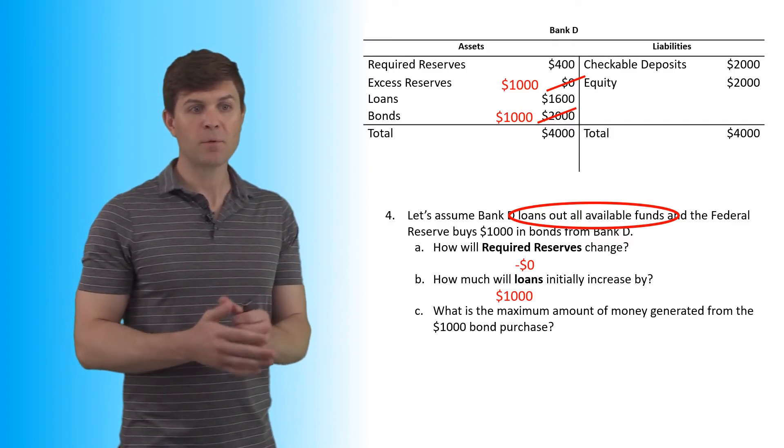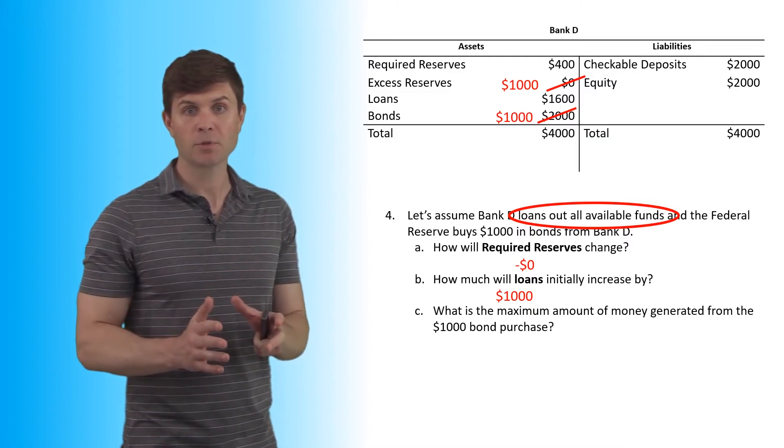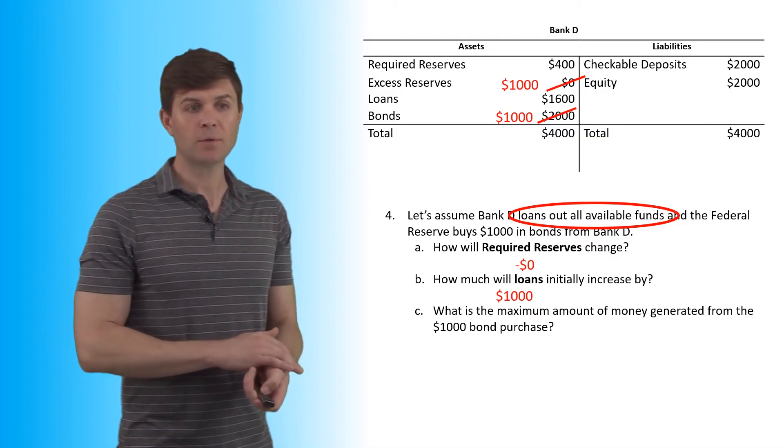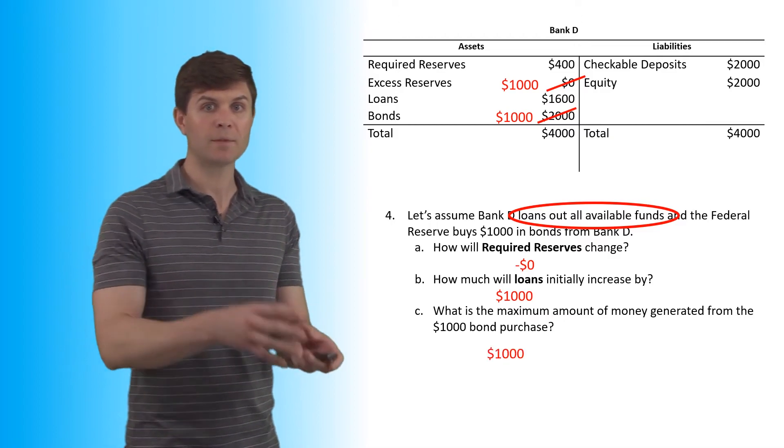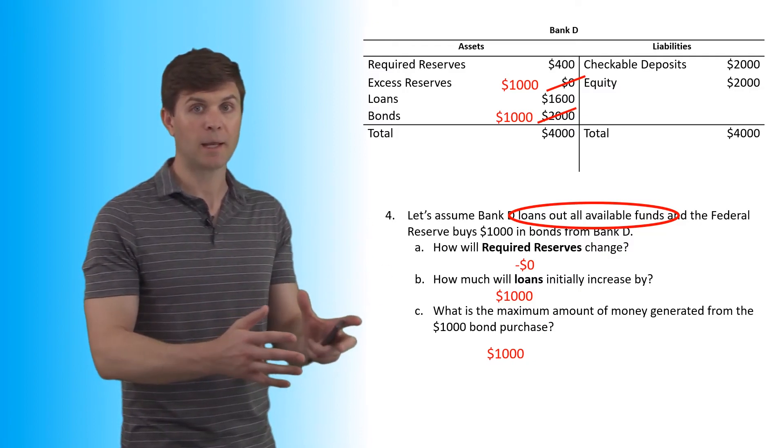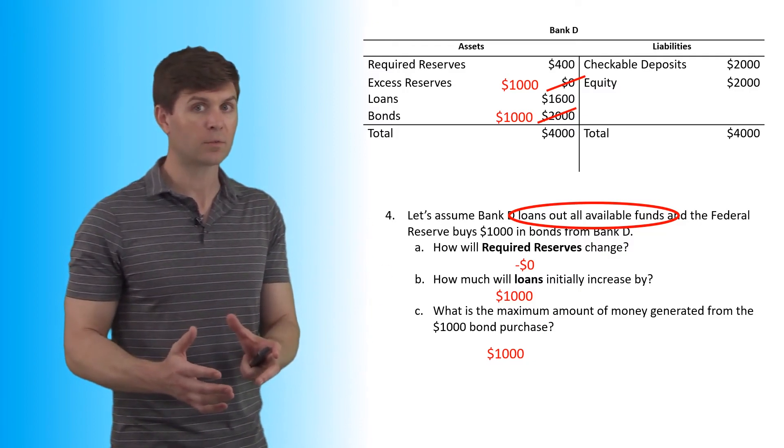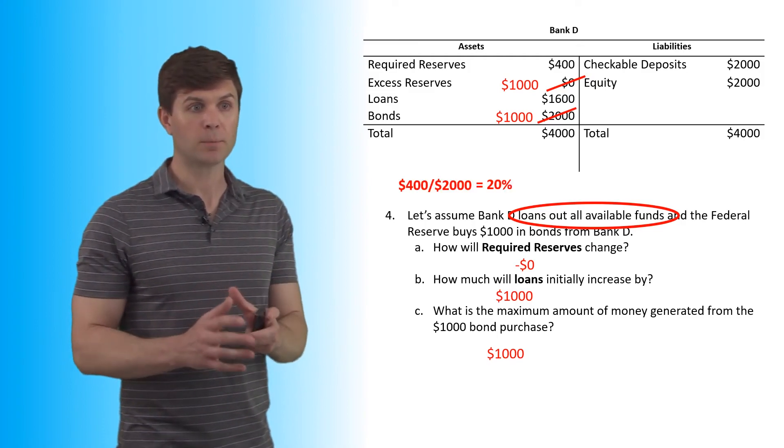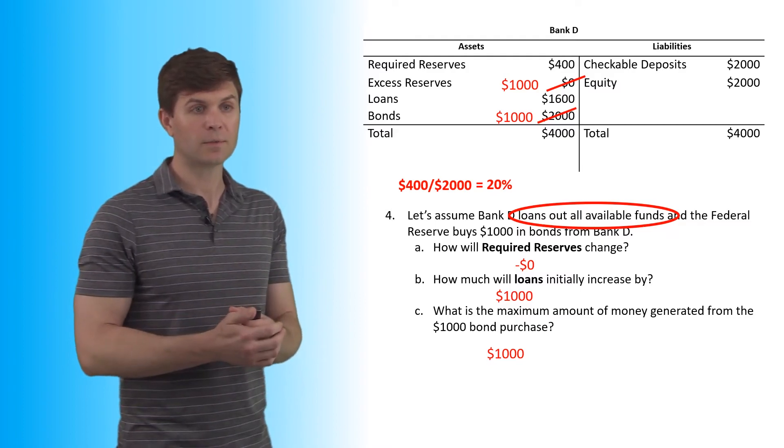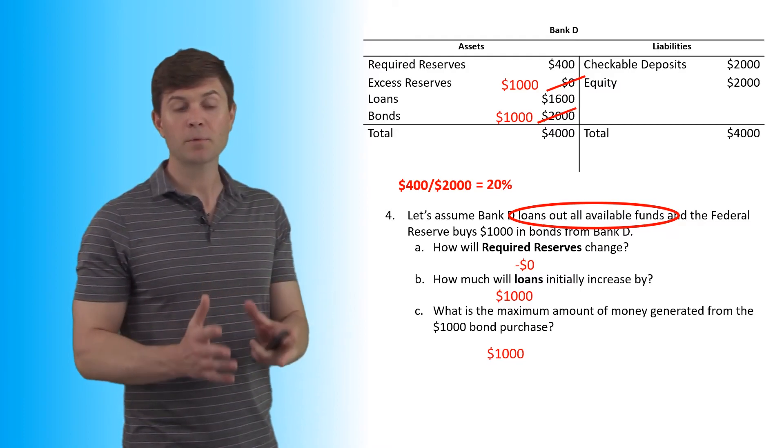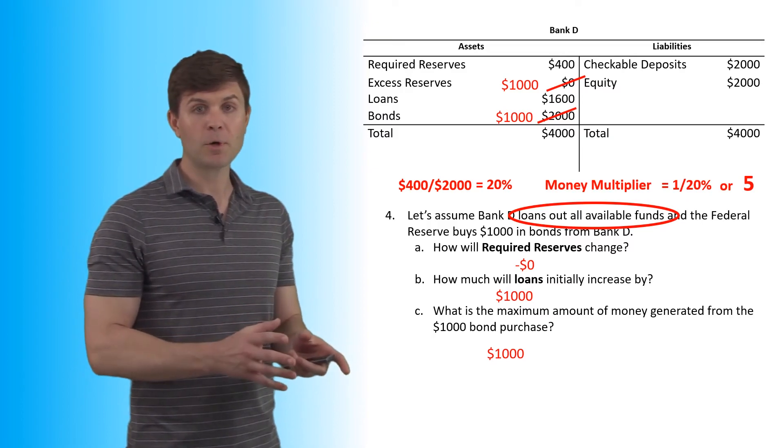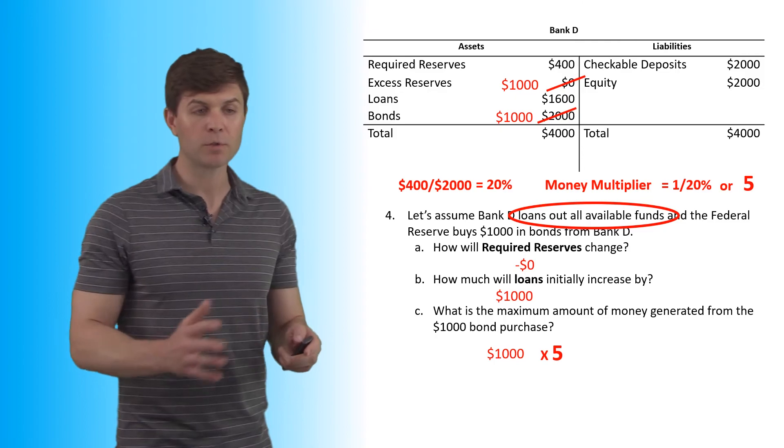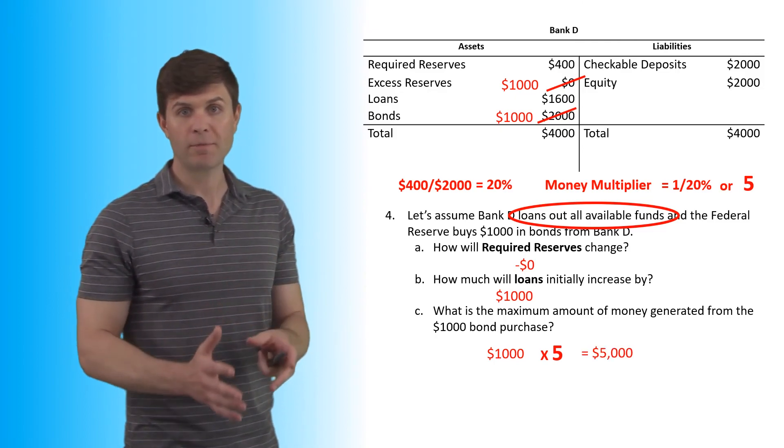So what is the maximum amount of money generated from the $1,000 bond purchase? Now we're assuming over time, the maximum potential. If this $1,000 is loaned out, redeposited back in the bank, everybody puts money back in the bank, and the bank continues to loan out all excess reserves, or all banks continue to loan out all excess reserves, this will get the full money multiplier. Now the required reserves based on $2,000 is $400. So we have a 20% reserve requirement here. So we have a money multiplier of five. So this $1,000 bond purchase will get multiplied through the system and turn into $5,000.